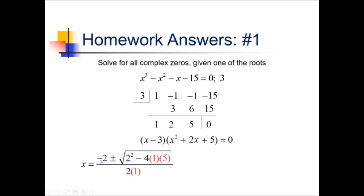So, simplifying this a bit, we've got negative 2, plus or minus the square root of, this is going to be 4 minus 20, so that's negative 16 in there, and then we have 2 in the denominator. Negative 16 can get simplified to, take out an i square root of 16, that's 4i. So, my answer is then, I've got x equals 3, and I've also, if I simplify this, I've got negative 1 plus or minus 2i.